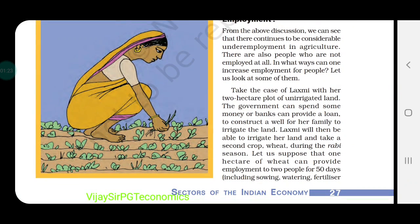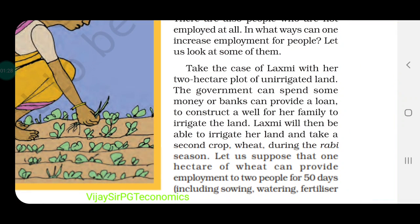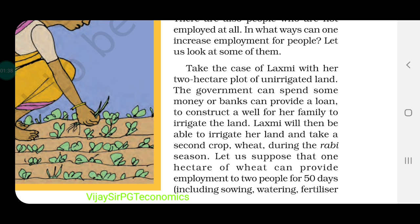Let's take an example which is given in our book. Take the case of Lakshmi, who has a two-hectare plot of unirrigated land. She does not have any irrigation facility on her land. The government can provide a loan to her so that she can buy some irrigation facility.